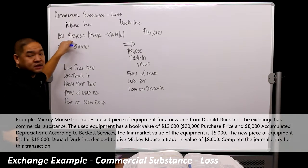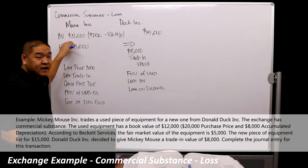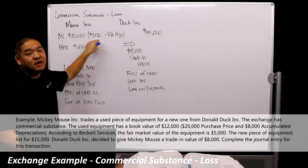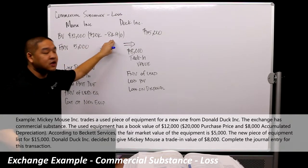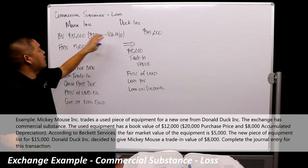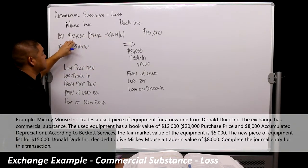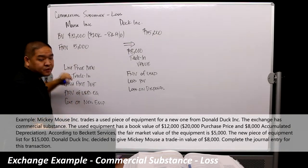So the used equipment has a book value of $12,000. If you don't remember from financial accounting, we get book value from taking the purchase price minus accumulated depreciation. So we purchased it for $20,000, we've already accumulated $8,000, therefore the book value is $12,000. That's how much it's worth in the books.